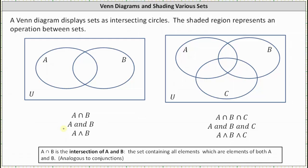So looking at the Venn diagram, the region that is both in set A and set B is this overlapping region here. This overlapping region represents the set that contains the elements that are in A and in B. This is the set A intersect B.